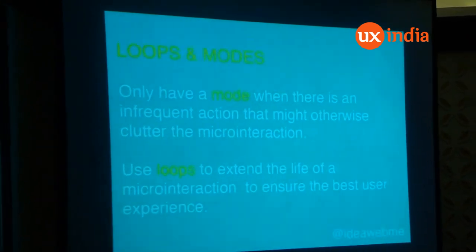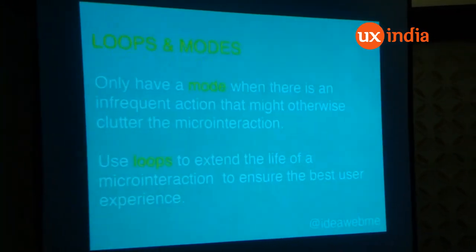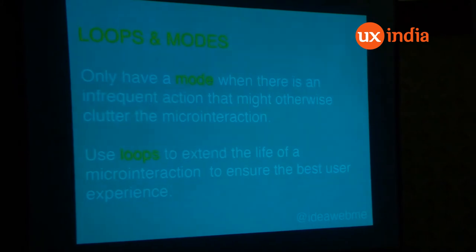Another part is loops and modes. Only have a mode when there is an infrequent action that might otherwise clutter the micro-interaction. Loops are supposed to ensure the best user experience. This is an example of modes, and this would be for loops — for example, get data every 30 seconds, setting up a timer. These are examples of loops.